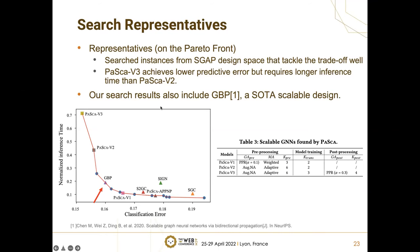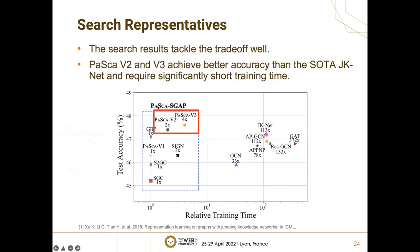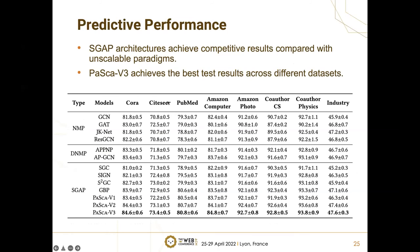Interestingly, our search results also include GBP, a recent state-of-the-art scalable design. We also evaluate representatives on industrial datasets, finding that the search results tackle the trade-off between predictive performance and training time well. For example, PASCAv2 and PASCAv3 achieve better accuracy than state-of-the-art JKNET and require significantly shorter training time. Finally, comparing representatives with state-of-the-art designs on eight datasets, SGAP architectures achieve competitive results compared with other unscalable paradigms. Among competitive baselines, the search representative PASCAv3 achieves the best test results across different datasets.